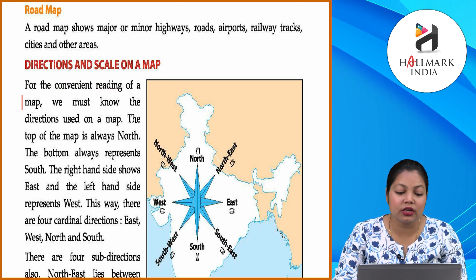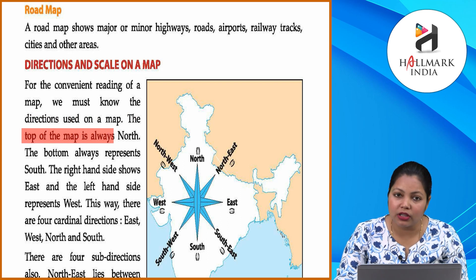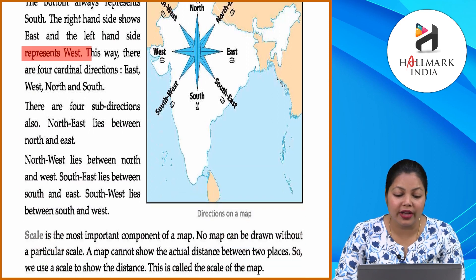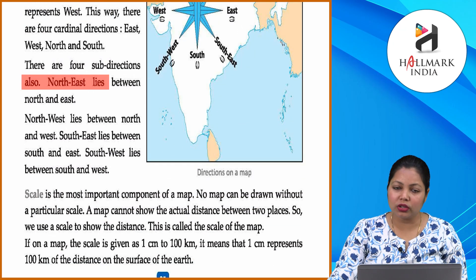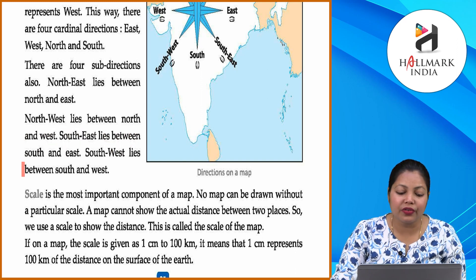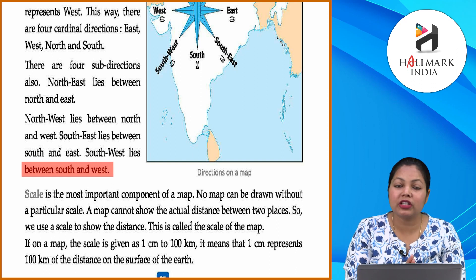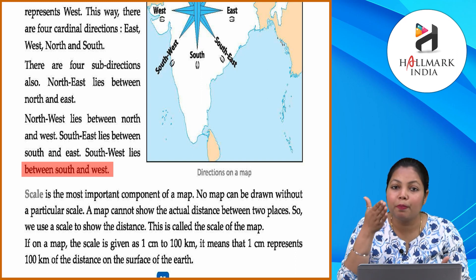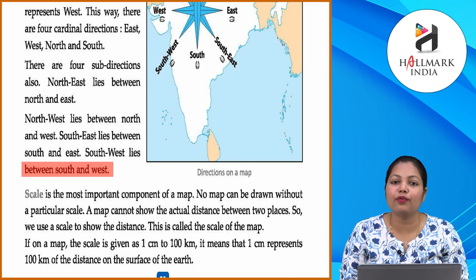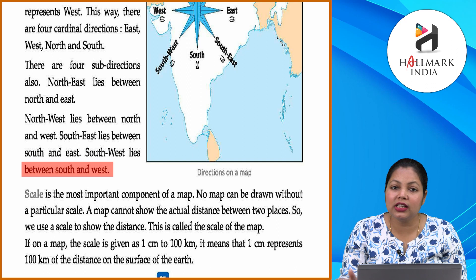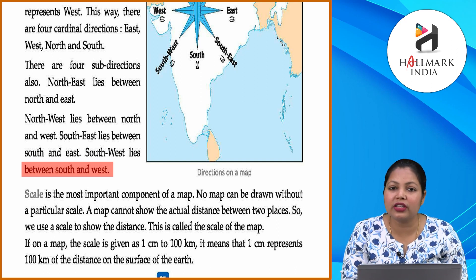Directions and scale of a map: For convenient reading of a map, we must know the directions used on a map. The top of the map is always North, the bottom always represents South, the right-hand side shows East, and the left-hand side represents West. These are called cardinal directions. There are also four sub-directions: North-East lies between North and East, North-West between North and West, South-East between South and East, and South-West between South and West.